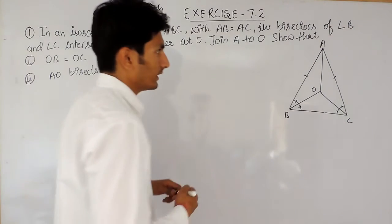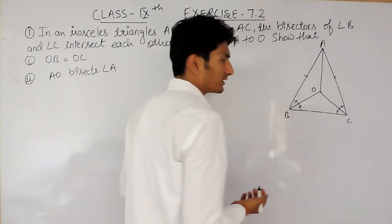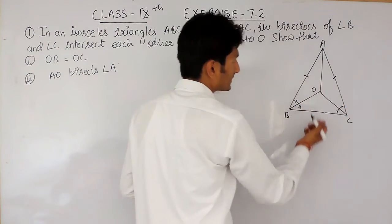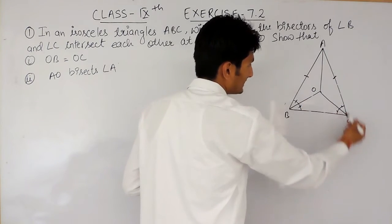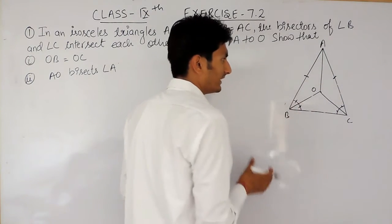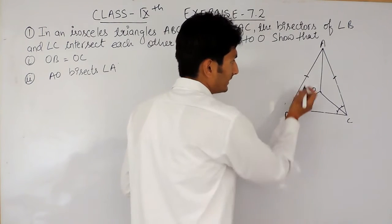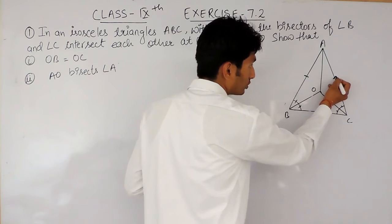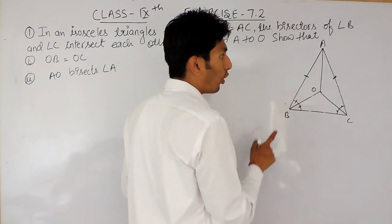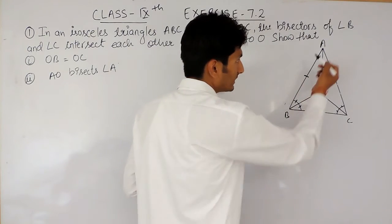First of all, this is an isosceles triangle. What is the property of an isosceles triangle? It has two equal sides, and AB and AC are the sides which are given equal in this triangle. Now, there is a property that in a triangle, if two sides are equal, then the angles opposite to these sides are also equal.